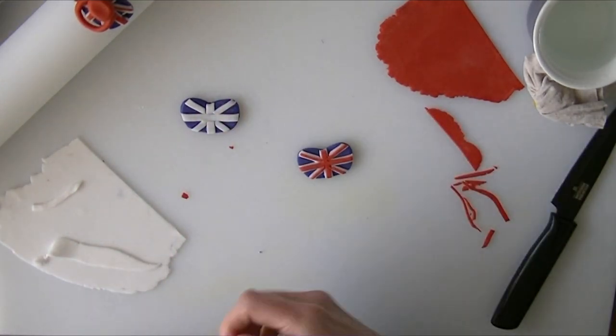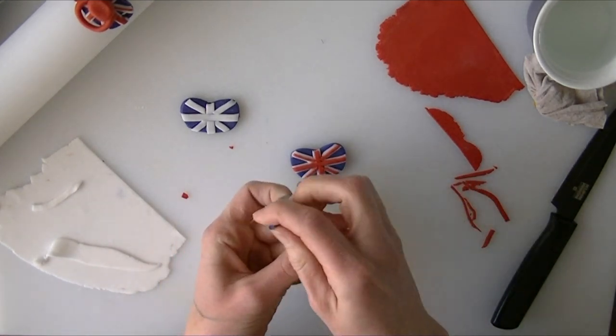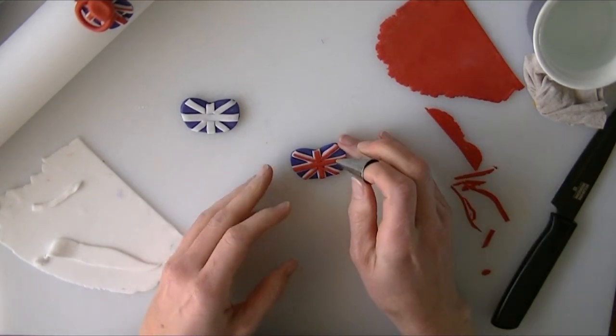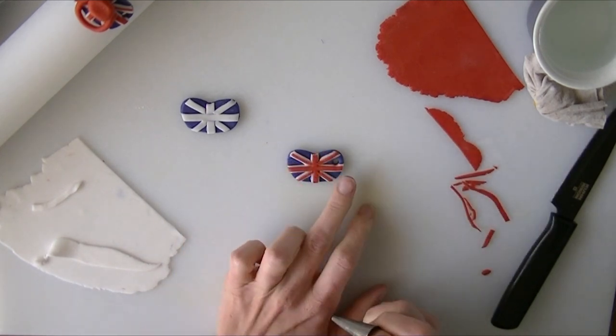Once we've got the red on, we're going to take a little piping nozzle to use for a round cutter. If you have a really tiny round cutter that's absolutely fine. I've got a number four nozzle here.